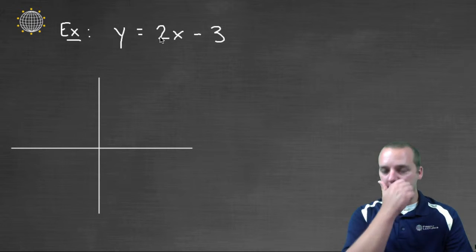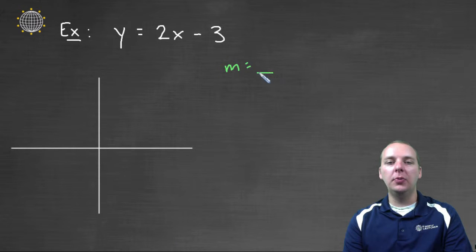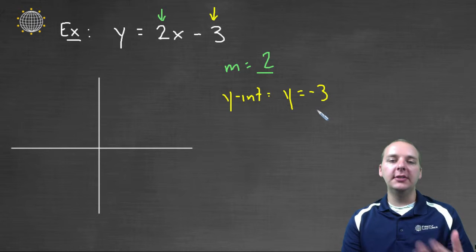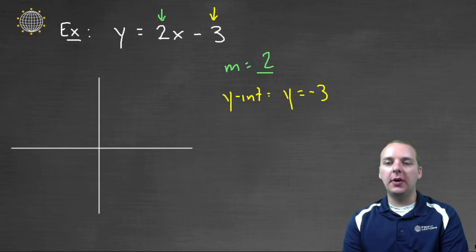So let's try a couple of examples. So the first example, let's try to graph y equals two x minus three, and so hopefully we can read off that the m, the slope, is the two, because that's the coefficient of the x. And the y intercept is negative three. So the y intercept, we'll just say y equals negative three. You could write it as a point, zero comma negative three, but on the y axis the y will be negative three.